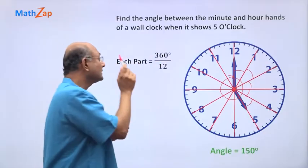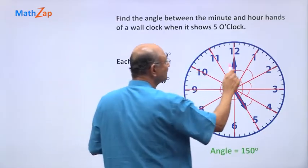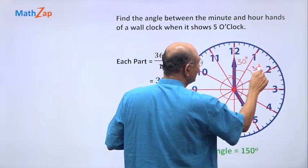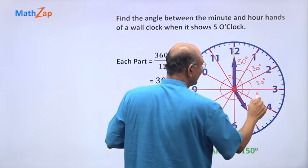So 360 by 12, 30 degrees. So each of this is 30 degrees, 30 degrees, 30 degrees, right? Like that.